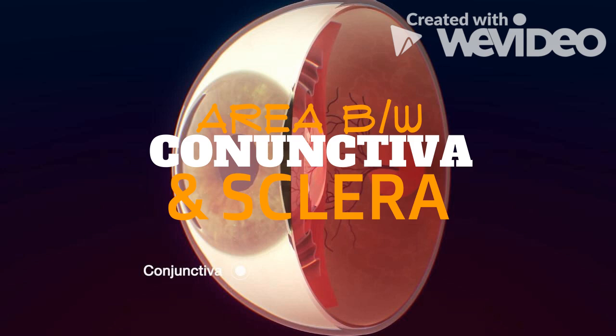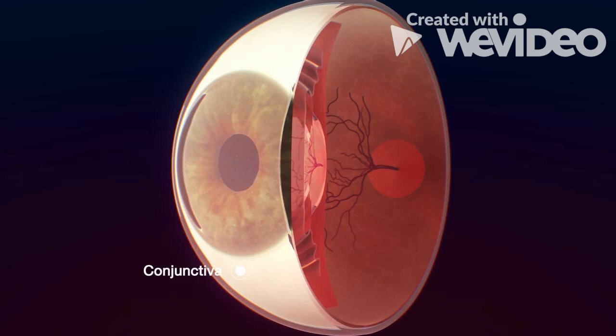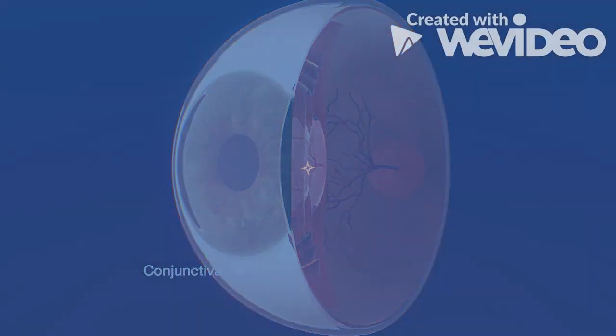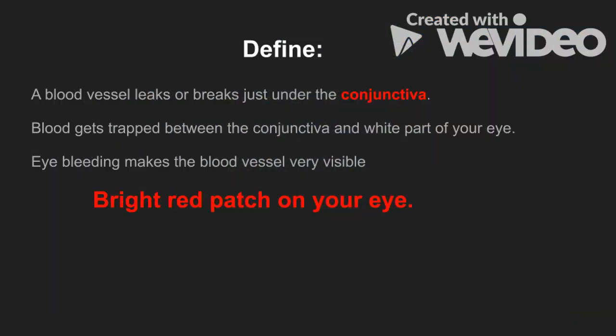The area between the conjunctiva and sclera is known as the subconjunctiva. Underneath the conjunctiva there are various small blood vessels which are very delicate in nature and can easily rupture with a small force. Subconjunctival hemorrhage, or bloodshot eyes, is bleeding from a small blood vessel over the white of the eye.